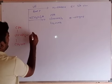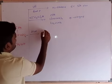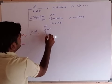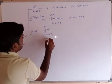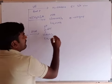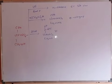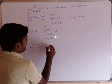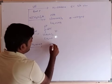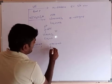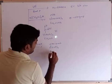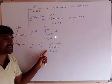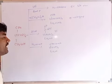Third evidence: glucose reacts with hydrogen cyanide to form glucose cyanohydrin, where C–OH and CN are added, confirming the aldehyde group. Fourth evidence: glucose reacts with hydroxylamine (NH2OH) to form glucose oxime (C=N–OH replacing CHO, with CHOH groups and CH2OH). Glucose oxime also confirms the presence of the aldehyde carbonyl group.